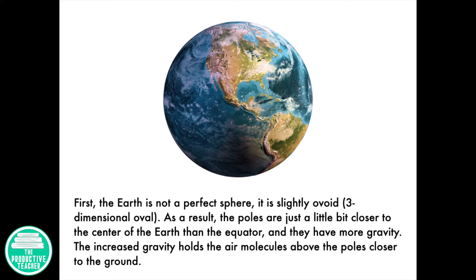As a result, the poles are just a little bit closer to the center of the Earth than the equator, and they have more gravity. The increased gravity holds the air molecules above the poles closer to the ground.